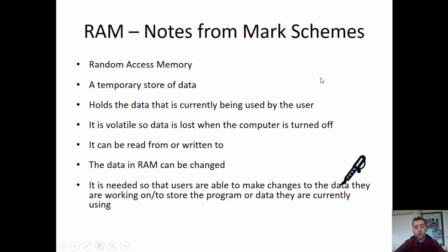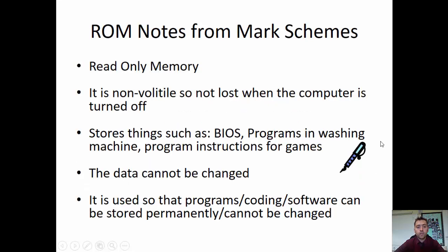When you press save, the data goes to the backing storage, which is probably your hard drive. To remember this: RAM, type of goat, volatile — a little bit unpredictable, a little bit crazy. Think of a crazy little goat and you'll remember that RAM is volatile. The data in RAM can be changed, and we need it to store what you're currently working on.